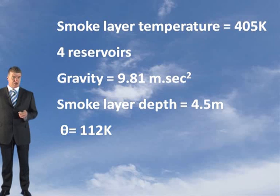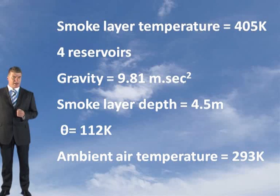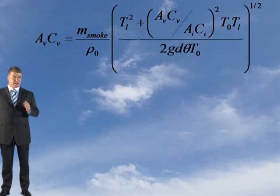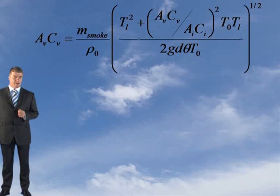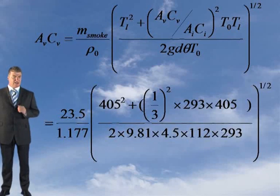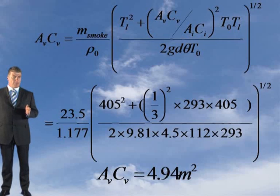Your temperature increase, the theta value, is 112 degrees Kelvin. The ambient air temperature can be taken as 293 degrees. Putting those figures into this formula, as you can see here, you should get an AVCV factor of 4.94 square meters.